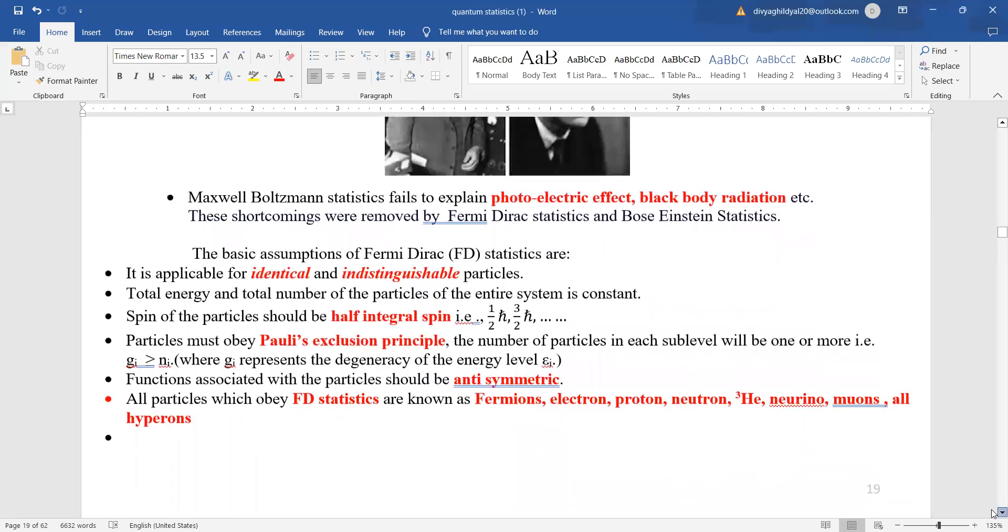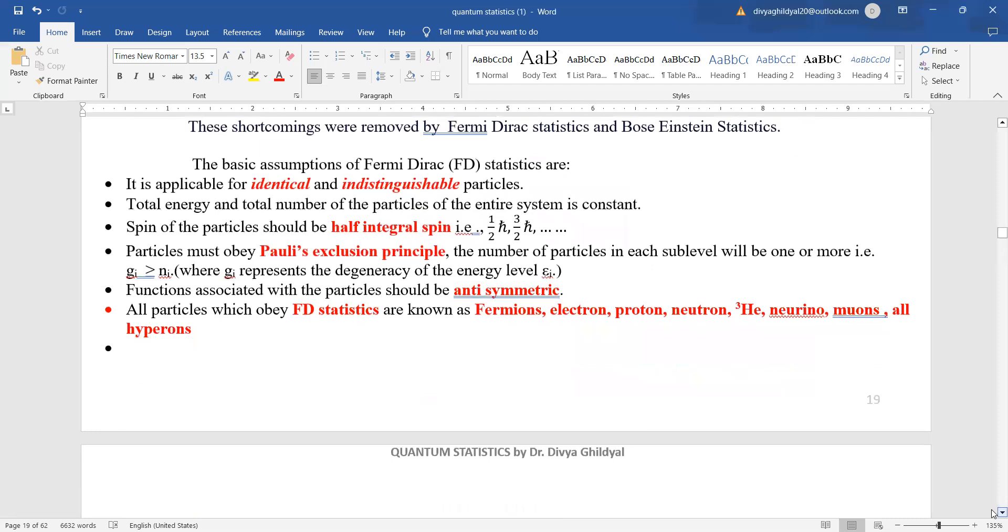Now the basic assumptions of Fermi Dirac statistics are: it is applicable for identical and indistinguishable particles, total energy and total number of particles of the entire system is constant, spin of the particles should be half integral.